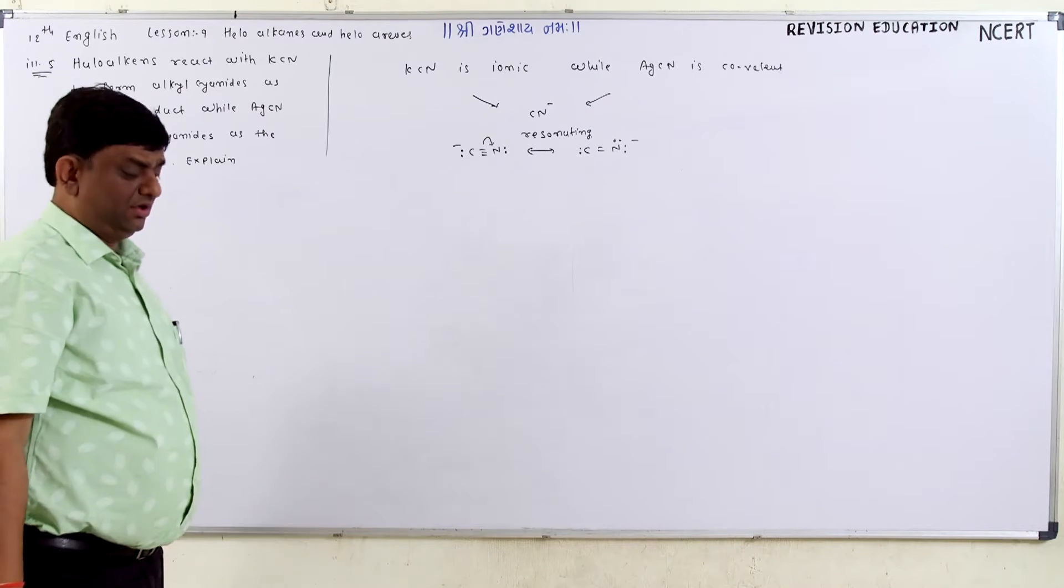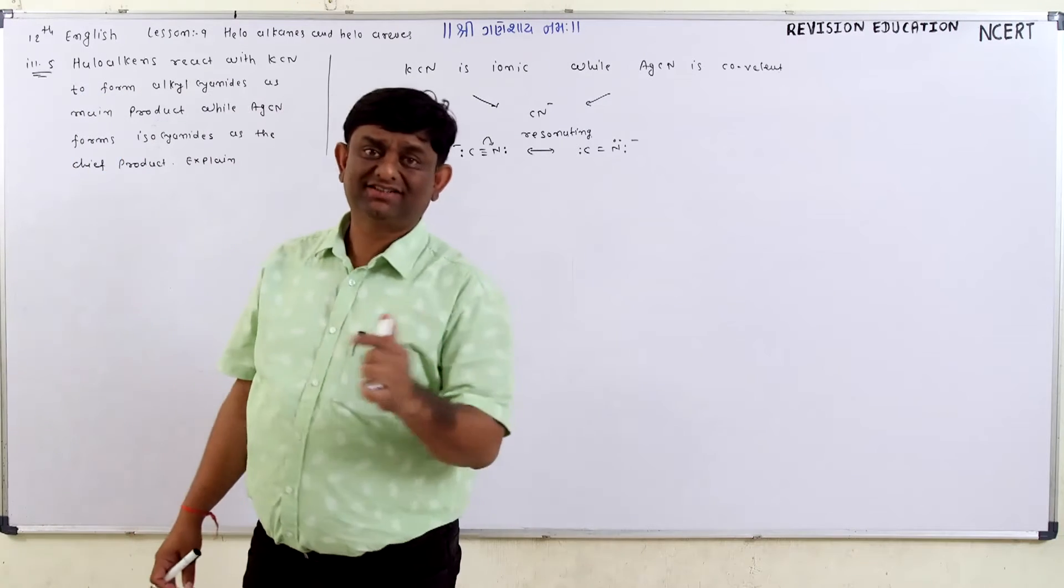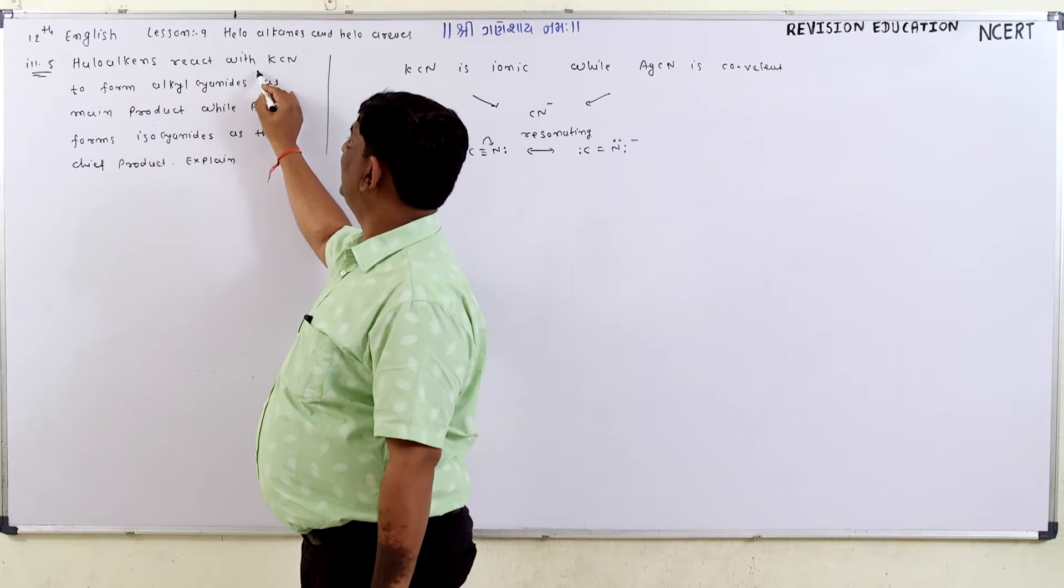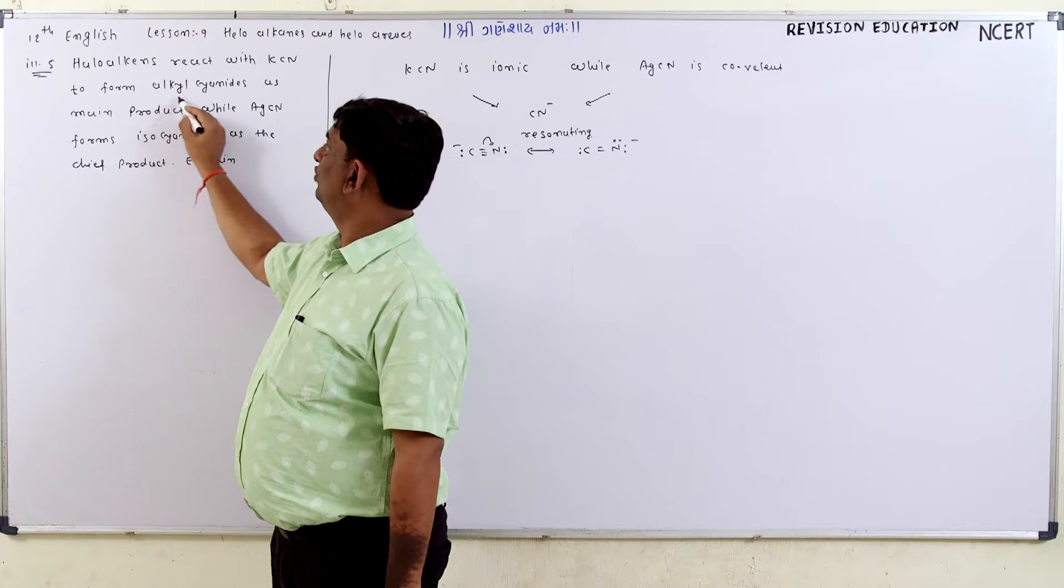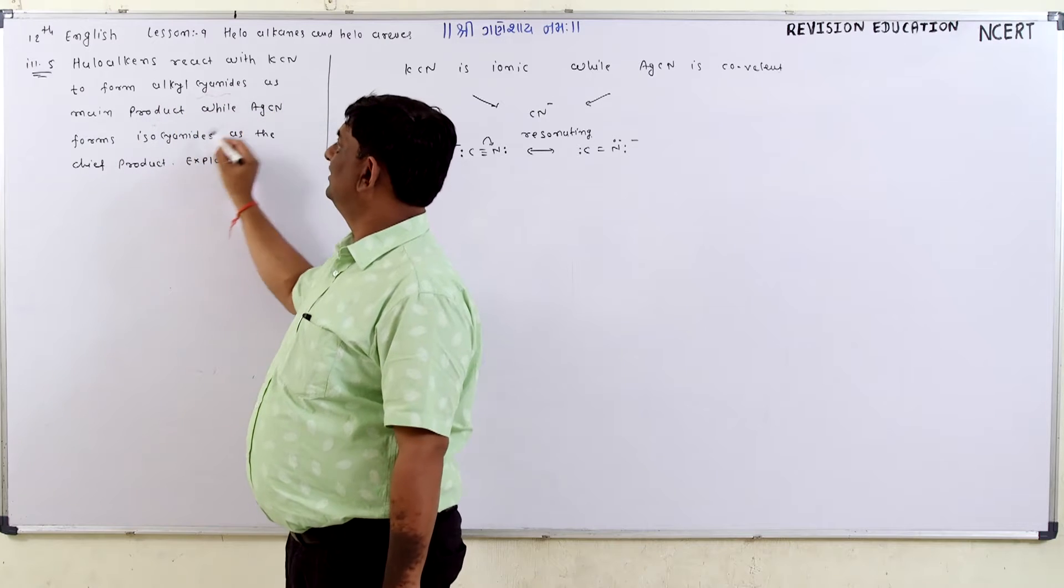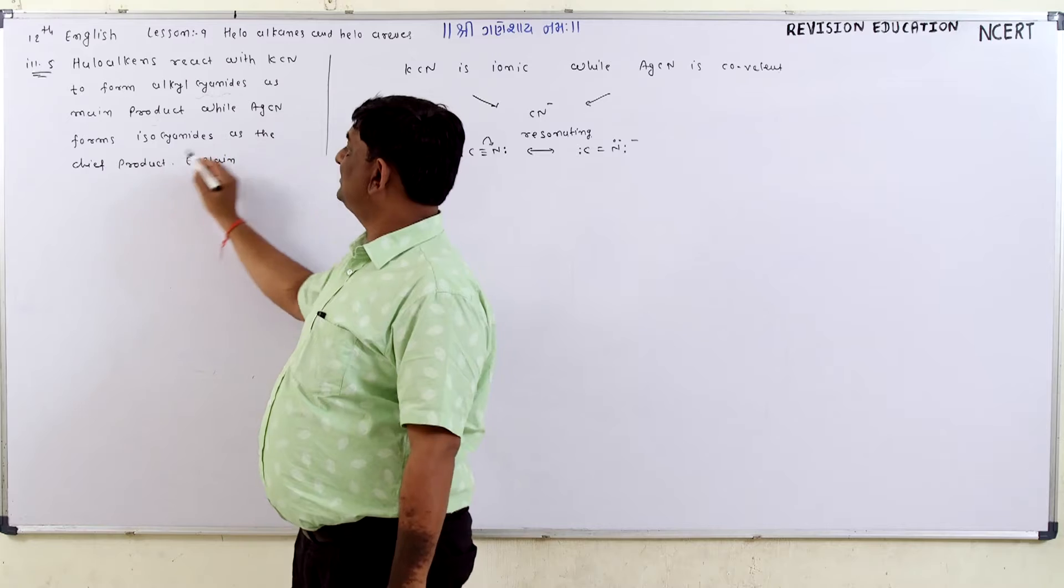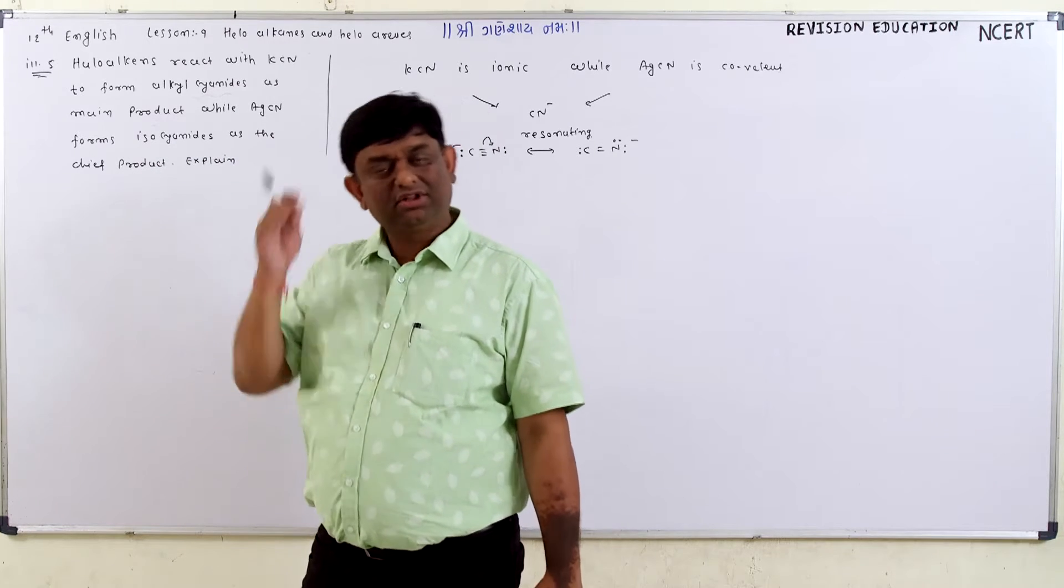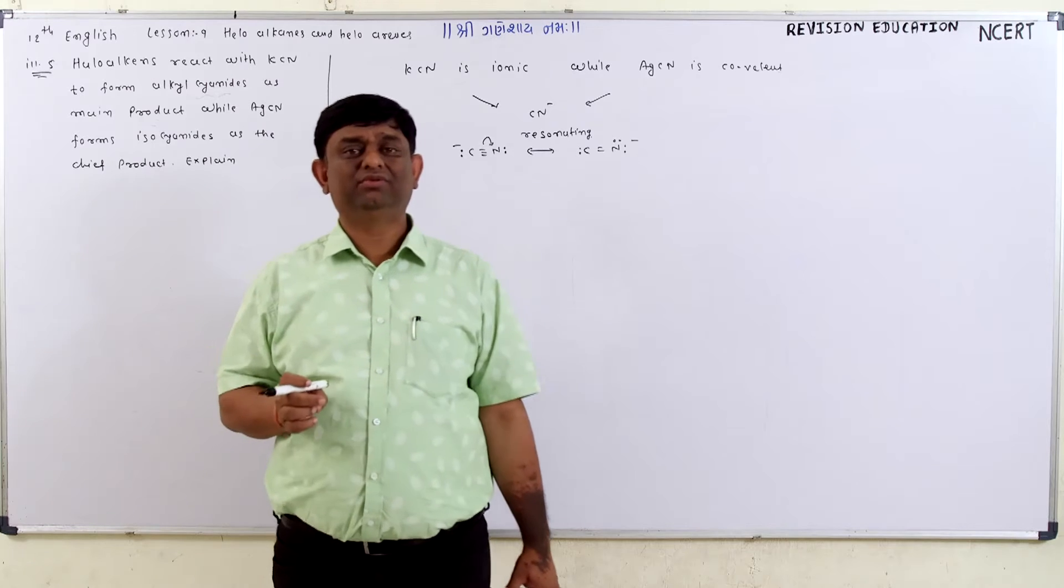Dear students, now we have to discuss illustration number 5. The question is: halo alkanes react with KCN to form alkyl cyanides as a main product, while AgCN forms isocyanides as the chief product. This question is very important to complete the equation.